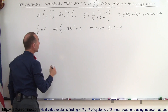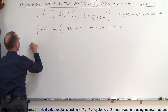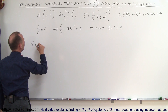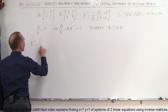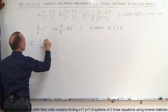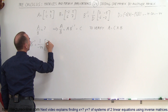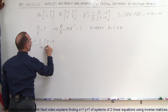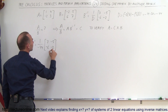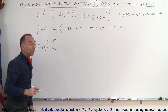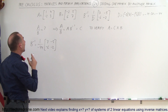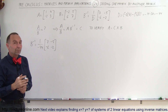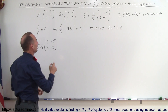So ultimately, B inverse is equal to 1 divided by minus 44 times the matrix of 7, negative 5, negative 6, and negative 2. Now we can divide A by B, because that's the same as multiplying A times the inverse of B.